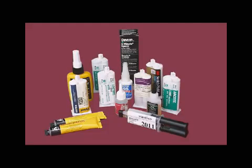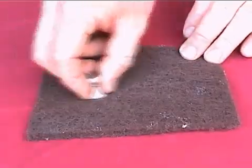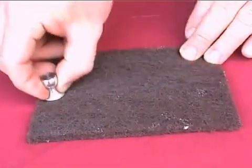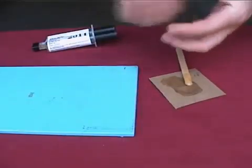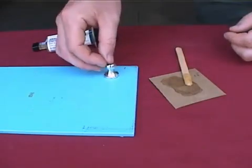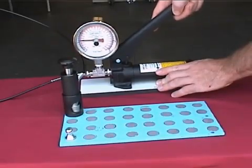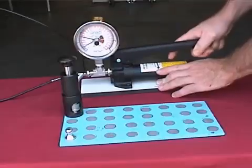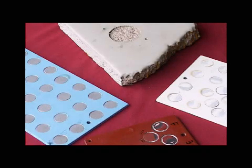To conclude, the pull-off adhesion testing process is made up of several critical steps. These include the selection of an appropriate adhesive, preparation of the dollies and coatings, adhering the dolly to the coating, the dolly pull-off process, and the final analysis of test results.